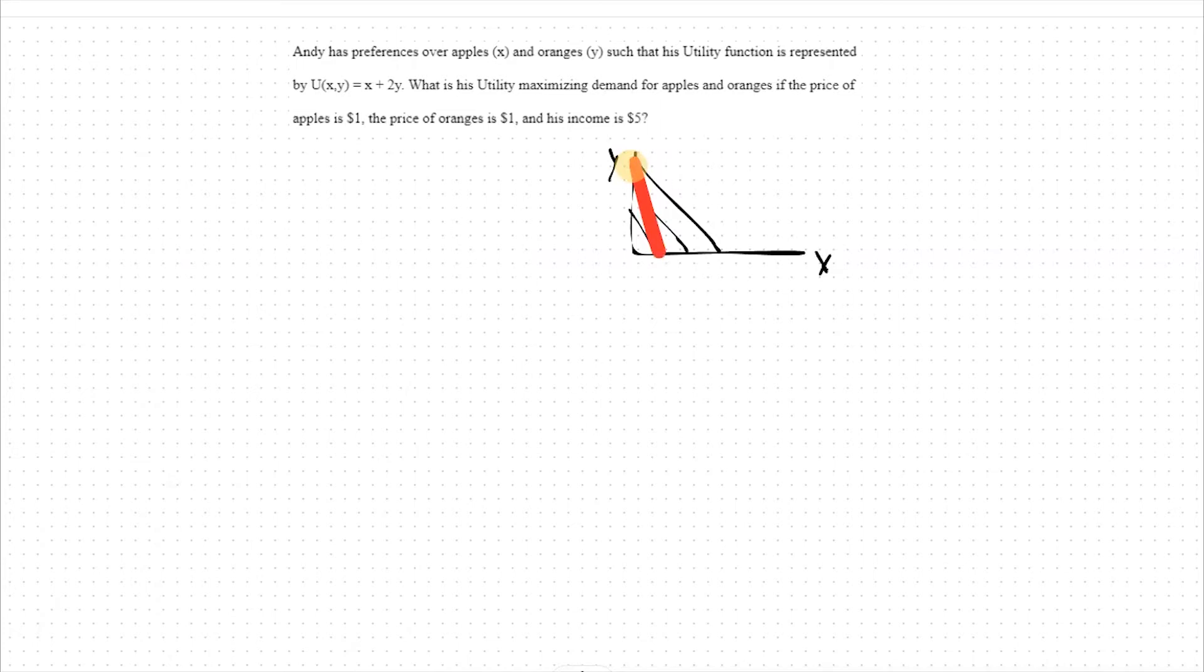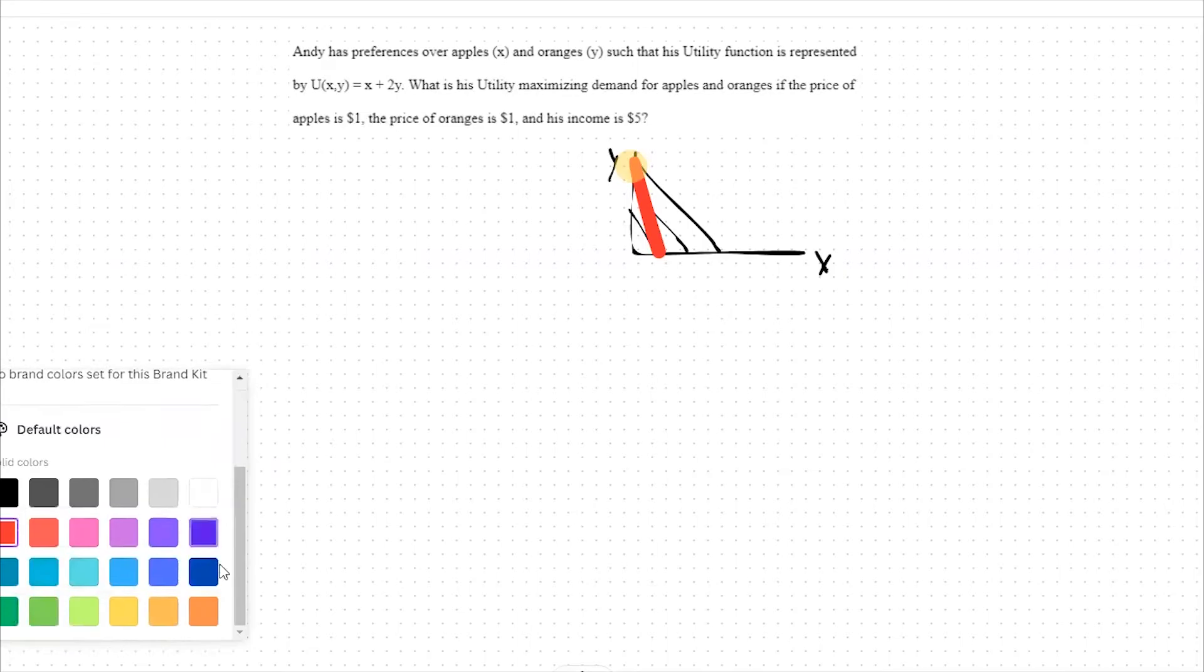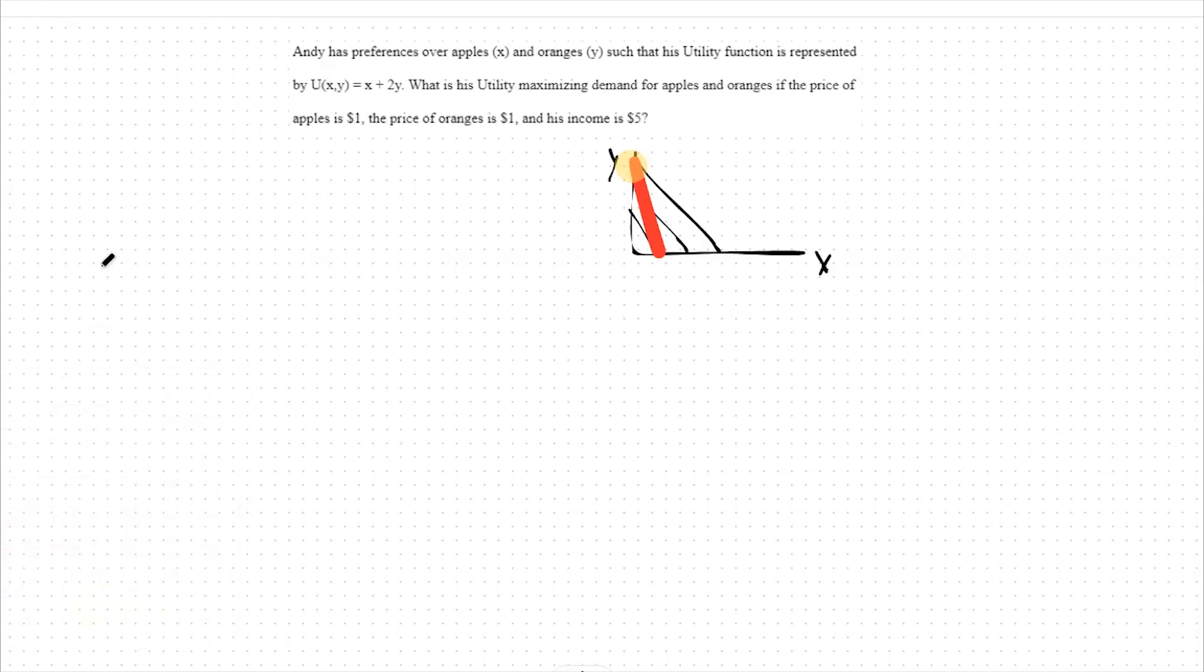On the flip side, let's look at the case where our budget constraint has a flatter slope than the utility curves. That would look something like this instead. In that event the highest possible utility curve we hit hits at the x-axis, meaning we purchase all of good x and none of good y.